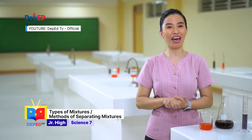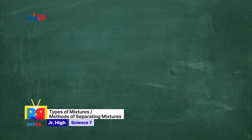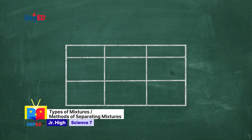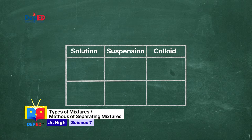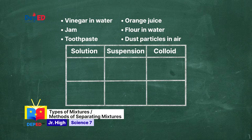Now it's time to see if you have understood the types of mixtures according to particle size. Classify each mixture into three groups — solutions, suspensions, and colloids — and arrange them in the table. Here are the mixtures: vinegar in water, jam, soot paste, orange juice, flour in water, and dust particles in air.